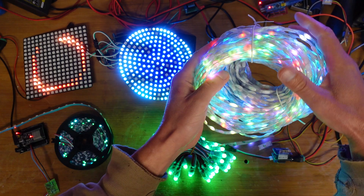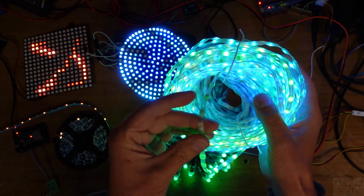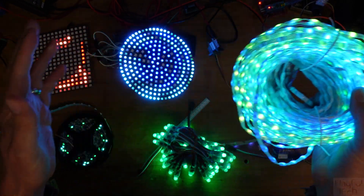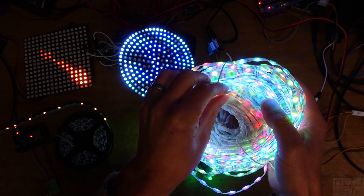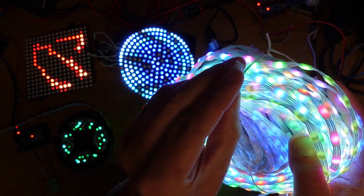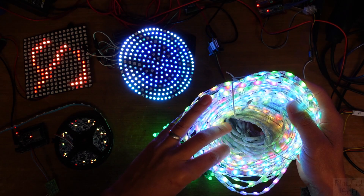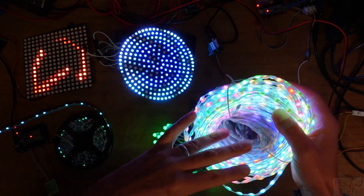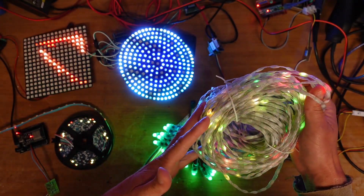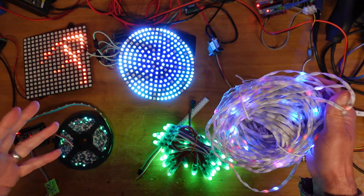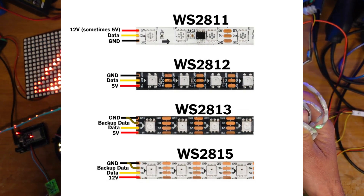Over here I've got some WS2815 LEDs, which come in a form factor commonly referred to as seeds or pebbles. Like the WS2811, these operate at 12 volts, but they come with an important difference: a backup data line. This allows the WS2815 to bypass any failed LEDs in a string — if one LED goes out, the rest of the strip keeps working. You can also get WS2813 chips which operate at 5 volts like the WS2812 but with a backup data line like the WS2815.